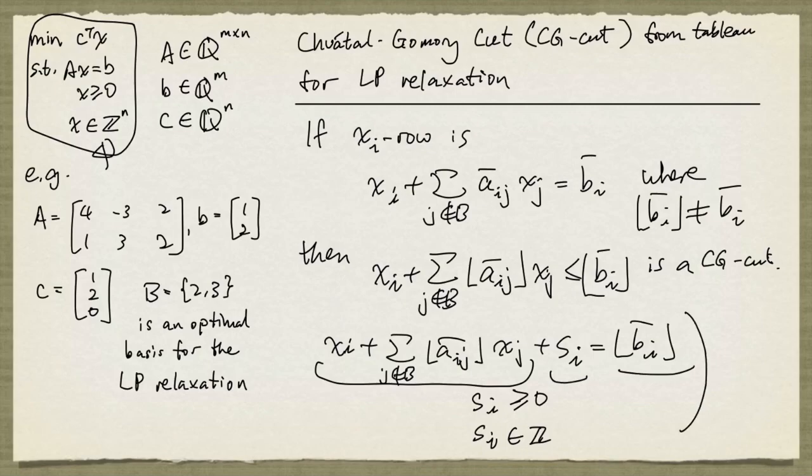If we add this to our original problem, we'll end up with a problem having the same form. So we can continue this process until we have found an integer optimal solution. This gives us a cutting plane algorithm, originally proposed by Ralph Gomory.